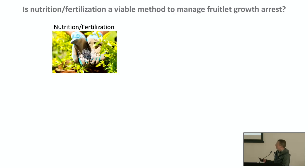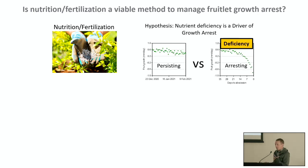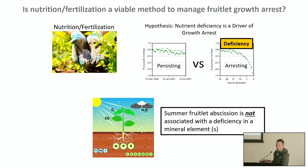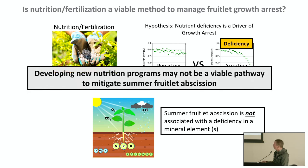We next asked whether nutrition or fertilization could be used as a management method. We hypothesized that fruit growth arrest could be stimulated by some mineral element deficiency, predicting that arresting fruits would display lower levels of a mineral element compared to persisting fruits. However, there was no indication of any mineral element deficiency. We conclude that developing new nutrition programs may not be a viable pathway to mitigate summer fruitlet abscission.